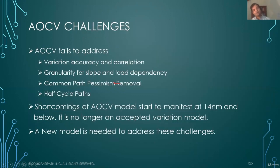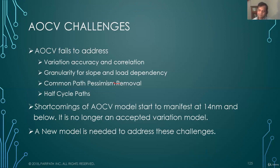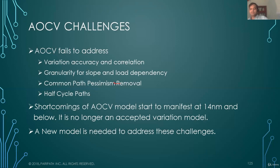AOCV also starts to fail to address some of these challenges in variation accuracy and correlation. At 40 nanometer, slew did not show that much deviation from the mean — delay showed more. Now at lower geometries, slope also starts to show significant difference and variation, and that is missing from AOCV. The second issue is that slope and load dependency on delay was also missing from AOCV.